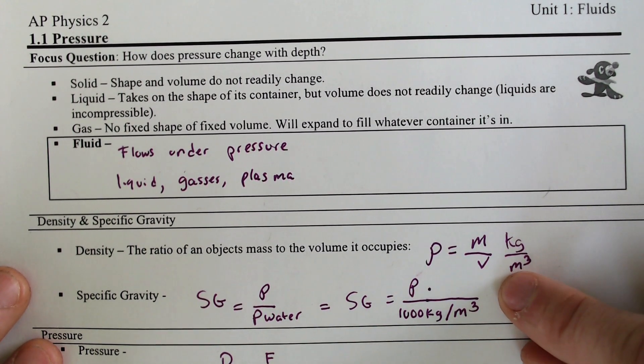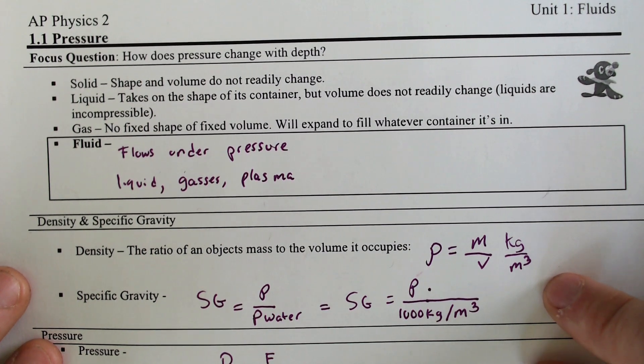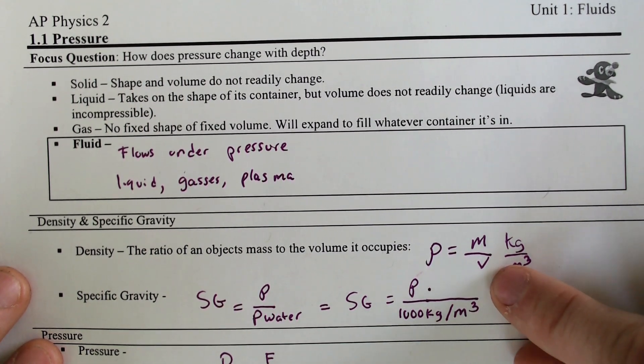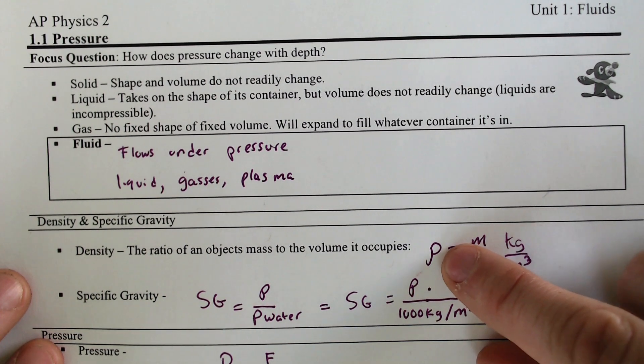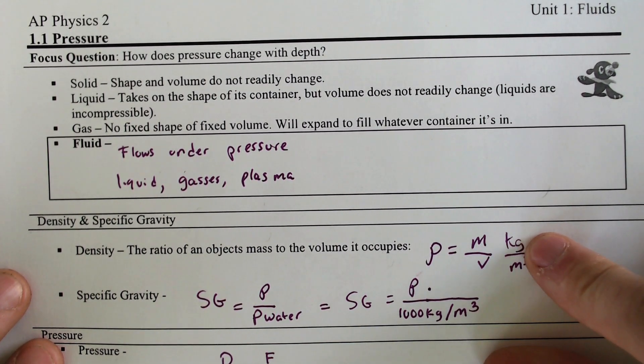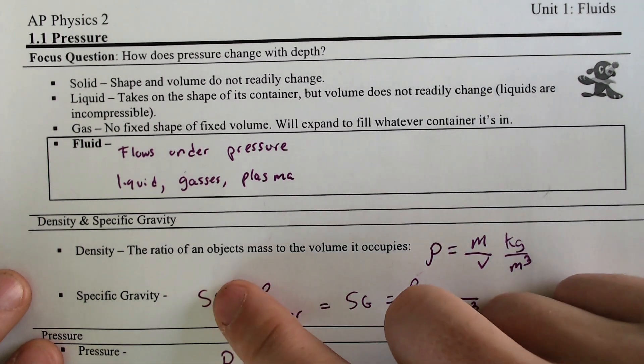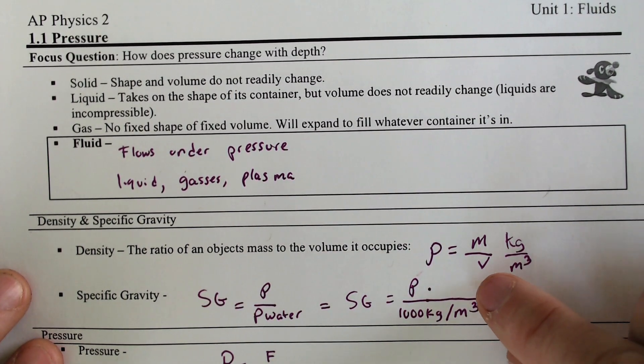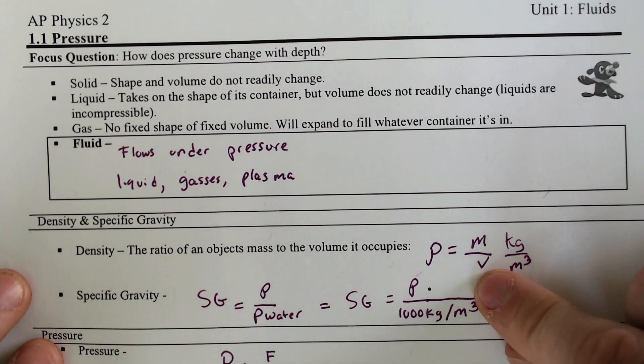It has the units kilograms per meters cubed. It makes sense that the object is going to be more dense the heavier it weighs. The more kilograms an object is, obviously it's going to be more dense.